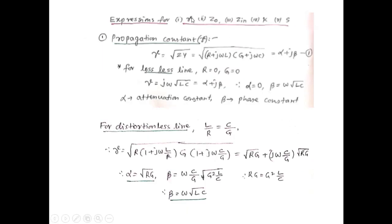The propagation constant γ = √(ZY) = √[(R + jωL)(G + jωC)] = α + jβ, where α is the attenuation constant and β is the phase constant. For a lossless line, R = 0 and G = 0, so γ = jω√(LC), giving α = 0 and β = ω√(LC).